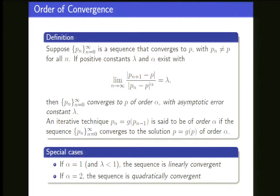Newton is much better than linear convergence — it's fundamentally better in that it has alpha equals 2, which is what we call quadratic convergence. The definition is clear, so just follow it. Two example problems illustrate this: here's a simple sequence that is linear convergence, where P_{n+1} equals P_n plus one half. If it has a limit, it must be a solution to P equals P plus one half.